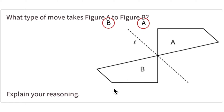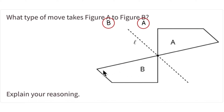There are three moves we've talked about. One is a slide, where you take the shape and slide it through the plane. You keep everything oriented in the same way, but every point gets slid the same distance and in the same direction.